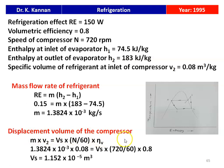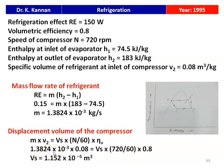The displacement volume of the compressor: volume flow rate = mass × specific volume = Vs × (n/60) × volumetric efficiency. Substituting: 1.3824 × 10⁻³ × 0.08 = Vs × (720/60) × 0.8. Calculating, the displacement volume Vs = 1.15 × 10⁻⁵ m³. This is the answer.